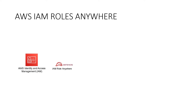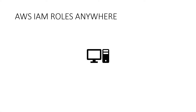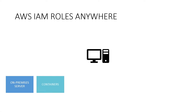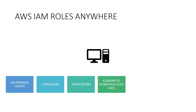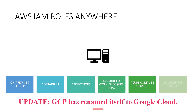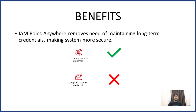IAM Roles Anywhere, as the name itself clearly suggests, will implement your IAM Roles on your workloads which can be anywhere, even if your workloads are running outside of AWS. We can use IAM Roles Anywhere for on-premises servers, containers, applications, or Kubernetes workloads, or any other compute services running outside of AWS, like on Azure or on GCP — it just needs to obtain your AWS credentials. This will remove the need for creating and managing long-term AWS credentials, making our system more secure.